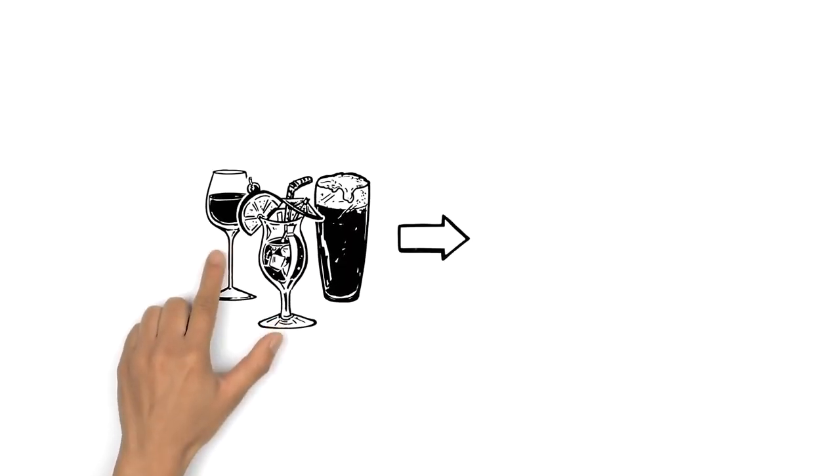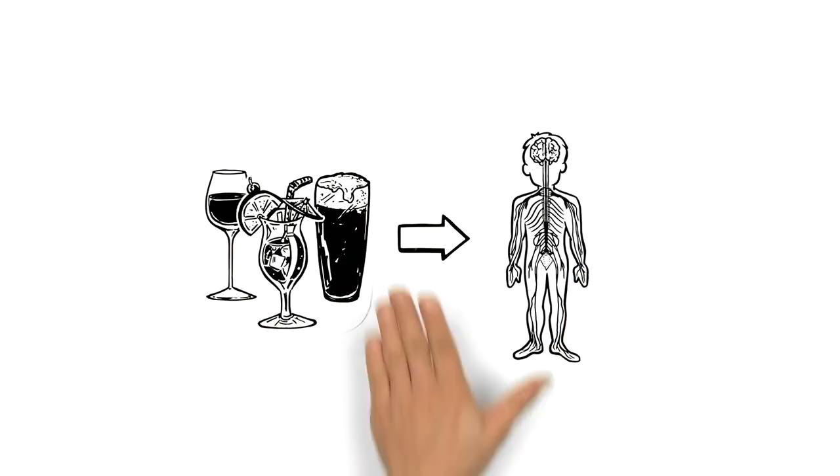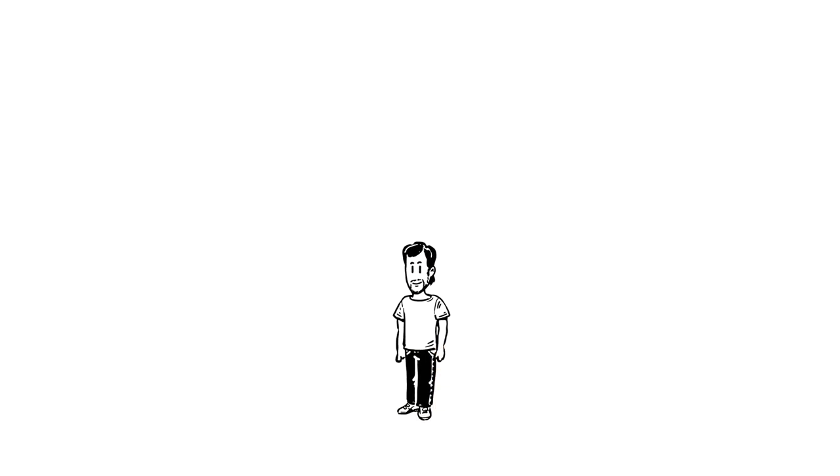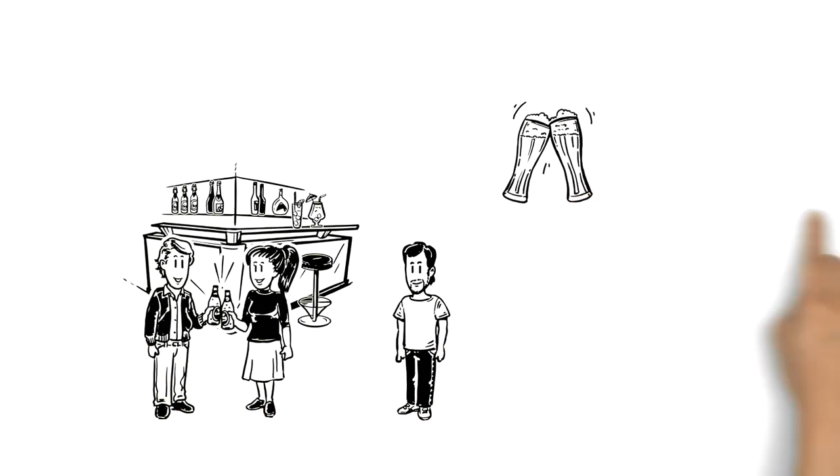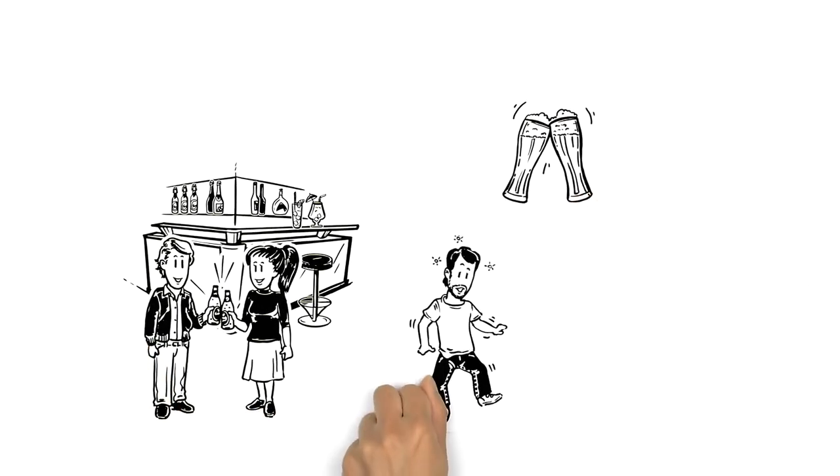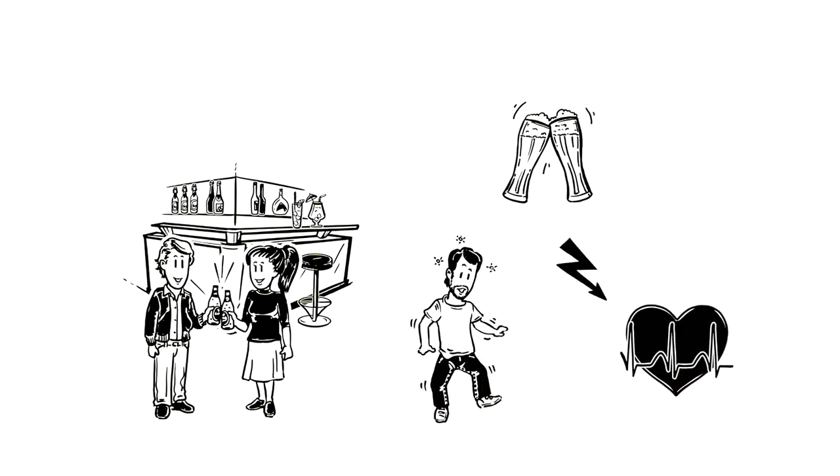We explained what alcohol does to your body. This is Michael. He enjoys going out and drinking at the weekend, sometimes a bit more than he should. He's worried that it might be affecting his health. What exactly is alcohol doing to him?